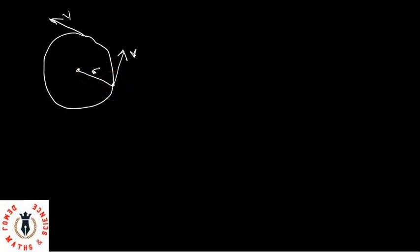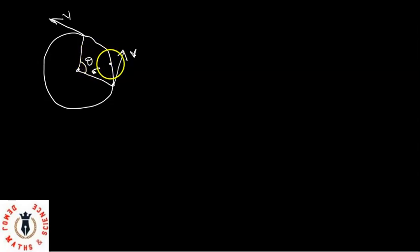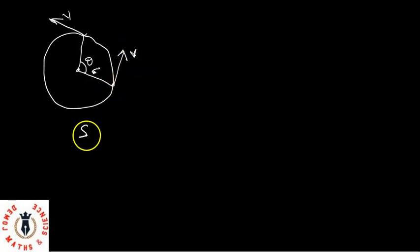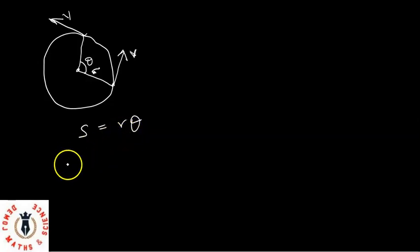For this object to have moved from here to this point, it must have covered a distance and moved through an angle. We'll call that angle the angular displacement theta. And it must have covered a distance S. We'll say that this distance S that this object has covered is the same thing as R theta.